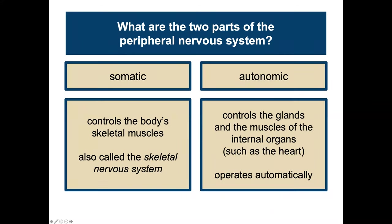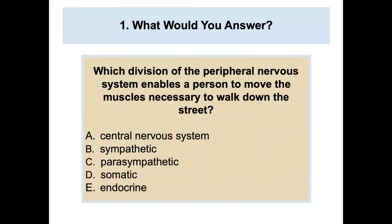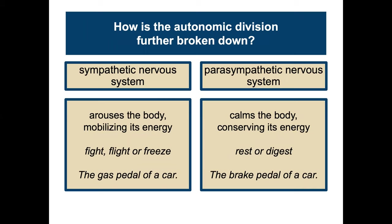The two parts of the peripheral nervous system are the somatic, which controls the body's skeletal muscles, and the autonomic, which controls the glands and muscles of the internal organs such as the heartbeat — it operates automatically. A quiz question: which division enables a person to move the muscles necessary to walk down the street? The answer is the somatic nervous system. The sympathetic nervous system arouses the body and mobilizes energy — fight, flight, or freeze — like the gas pedal of a car.